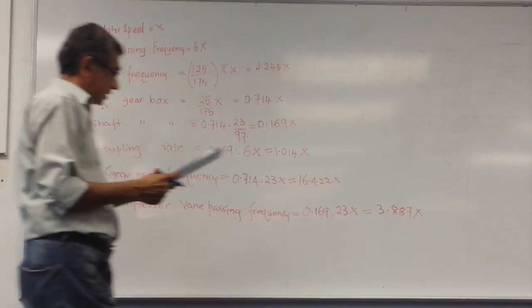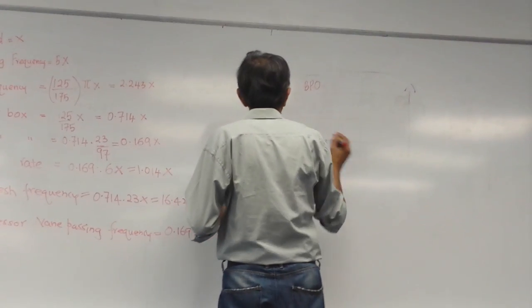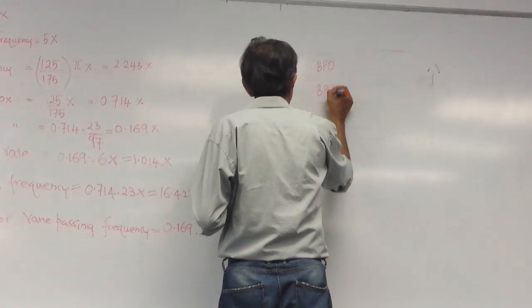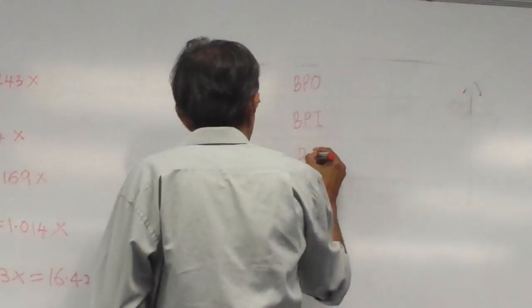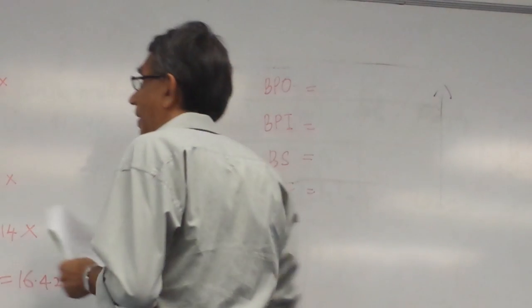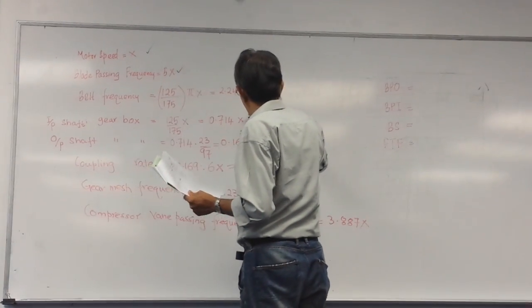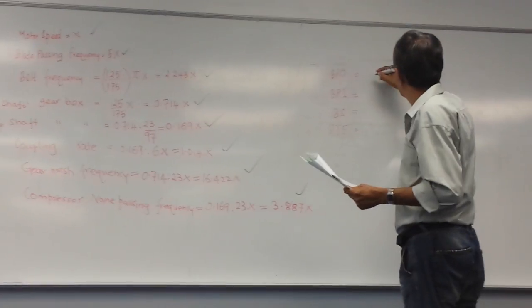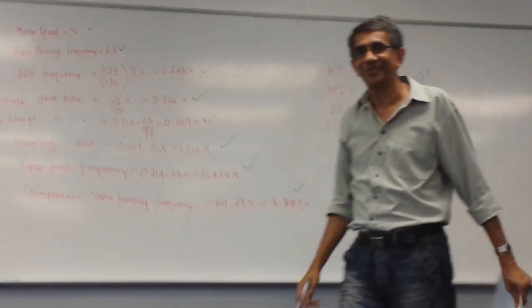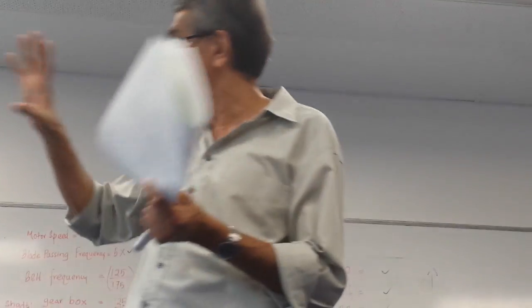We can also calculate for the bearing. You have to use the formula — there's an equation for VTF: outer race, inner race, ball spin frequency, and the cage train frequency. Imagine the vibration signature — how many signatures you can calculate from this little diagram. We calculate everything. How many are there? 1, 2, 3, 4, 5, 6, 7, 8, 9, 10, 11, 12 — so there will be 12 spikes.